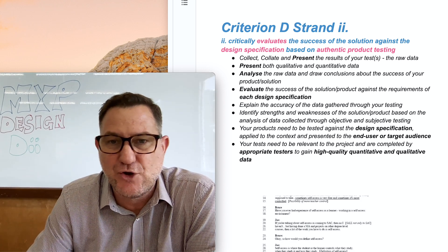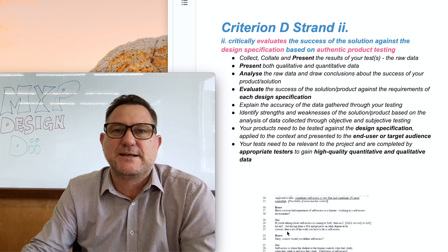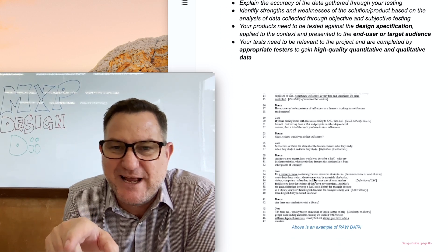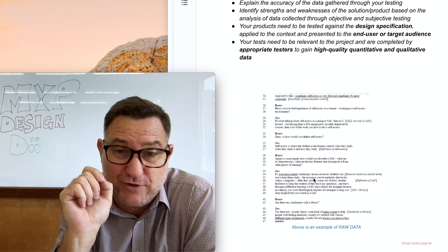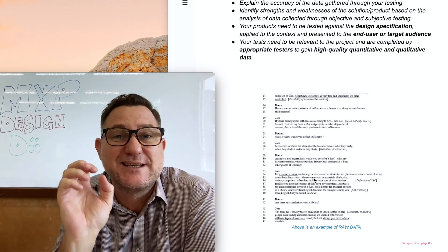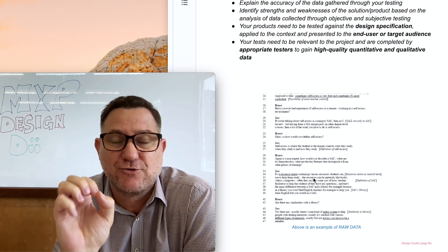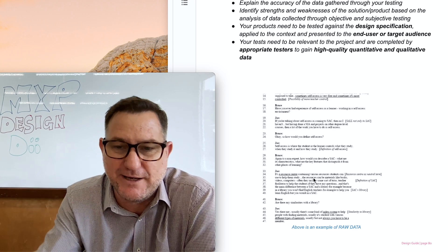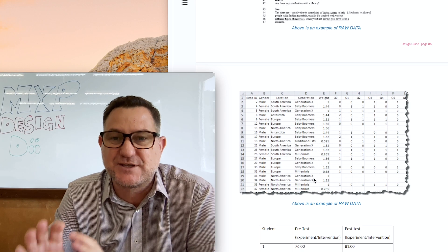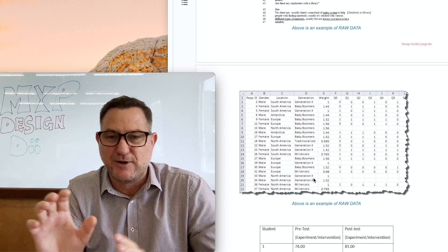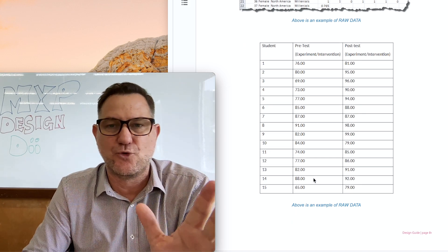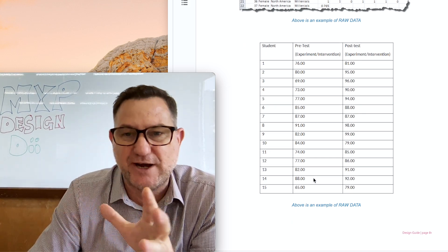Let me give you some examples. Step one is sharing the raw data. This section here is a transcript of an interview conducted with a client — you don't need to read the words, but this is raw data. Here's another example of raw data with just numbers and words. Step one: whatever you've collected, just share it.